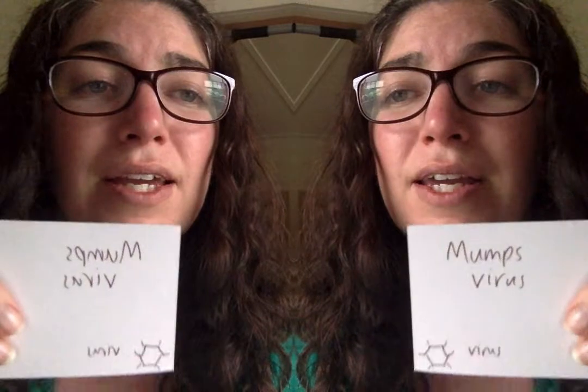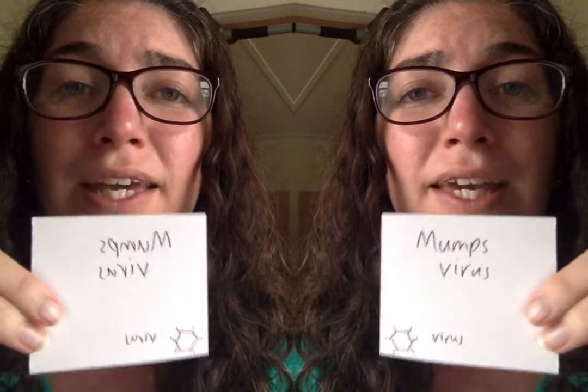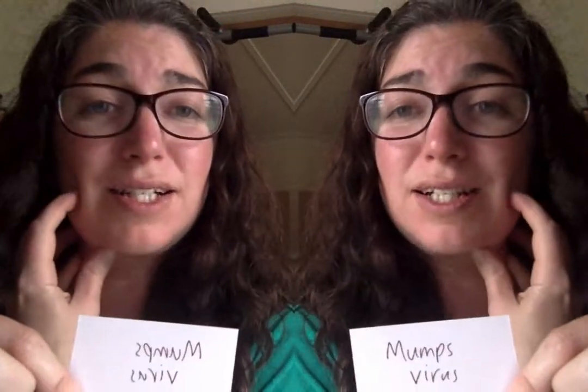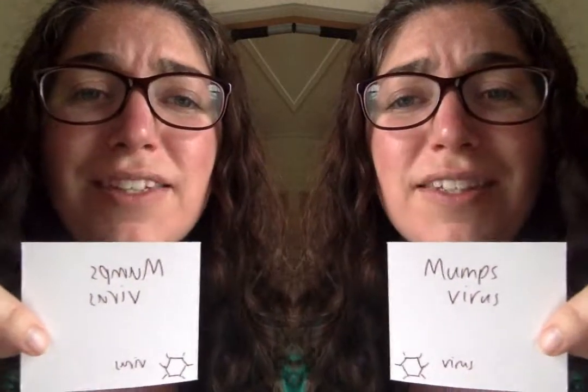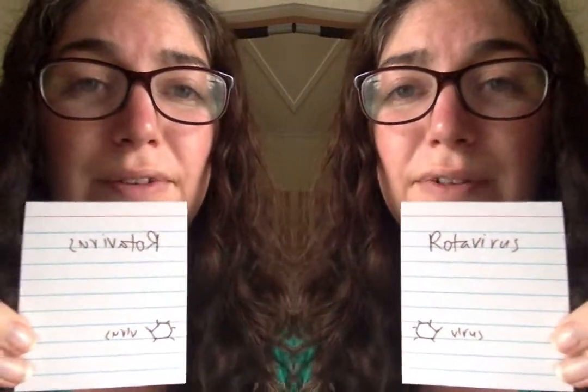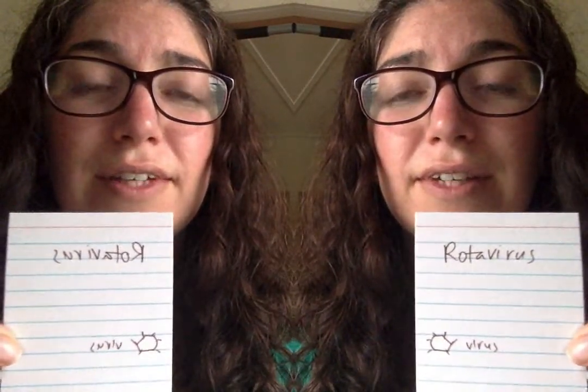Mumps virus — mumps is a disease we vaccinate for; it's part of the MMR vaccine, measles, mumps, and rubella. So we don't see it that often anymore. It causes a swelling of the lymph nodes, particularly in the neck, so you get these big lumps, really swollen-looking cheeks — almost like somebody who's had their wisdom teeth removed. The disease is called mumps. Not so common to see it anymore because of vaccination, but we could start seeing it more because of lack of vaccination.